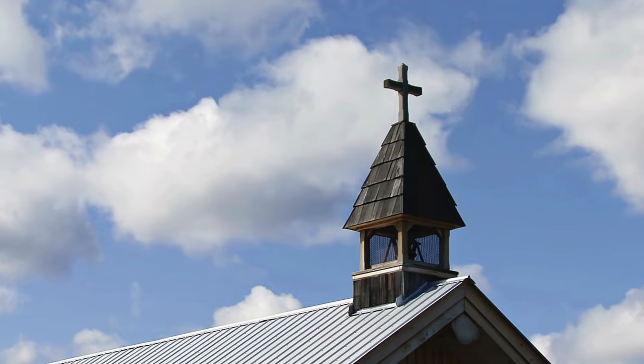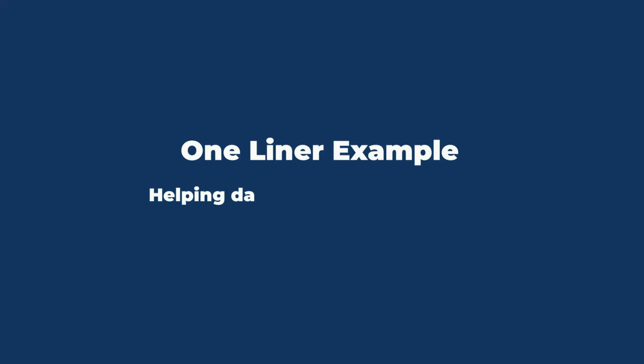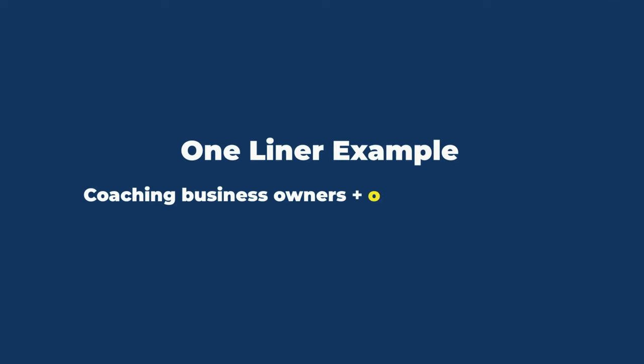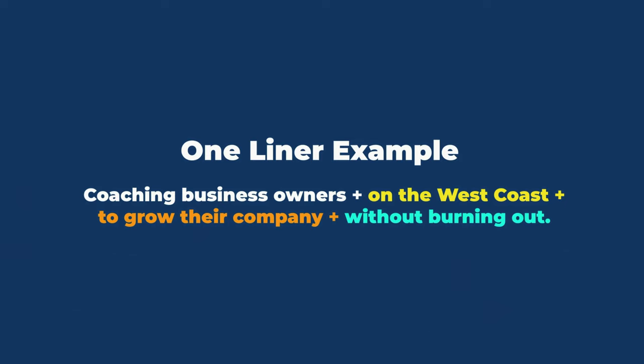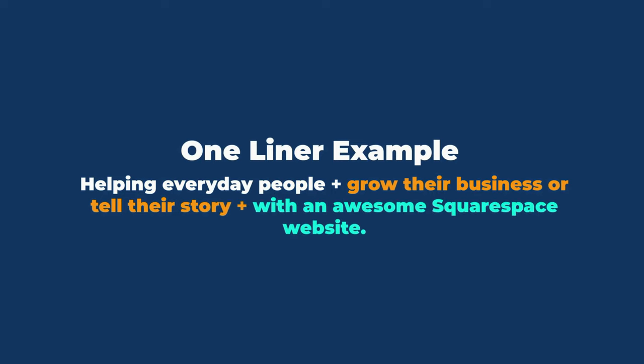Here is a simple equation: who you help + where you help them + how you help them + the benefit you bring. For example: 'Helping dads in the Atlanta area lose weight to feel like themselves again.' Or: 'Coaching business owners on the West Coast to grow their company without burning out.' If you're not geographically bound, you can leave out the location. Here's an example of my own one-liner: 'Helping everyday people grow their business and tell their story with an awesome Squarespace website.' It cannot be overstated how much you need to nail this — it's your elevator pitch, the thing you put on your email signature.